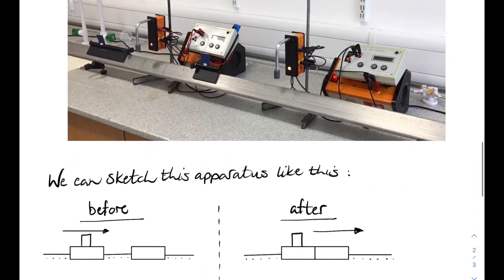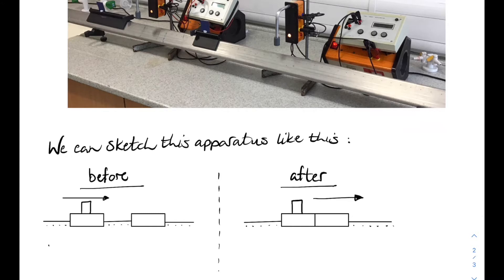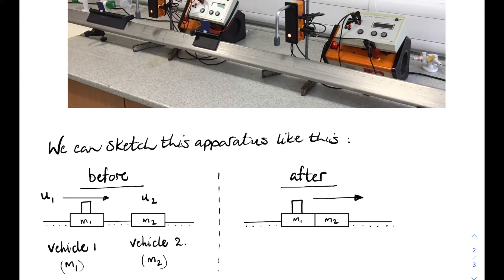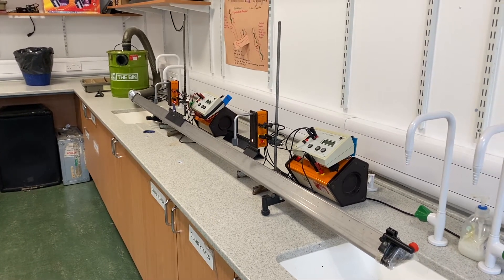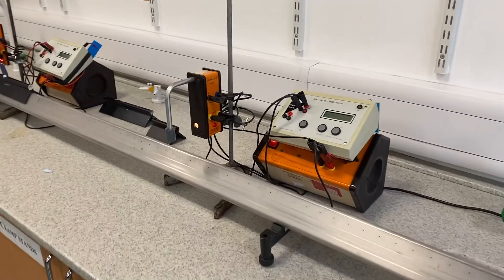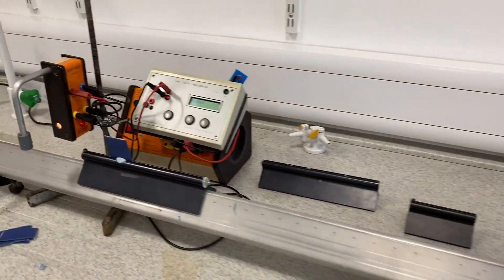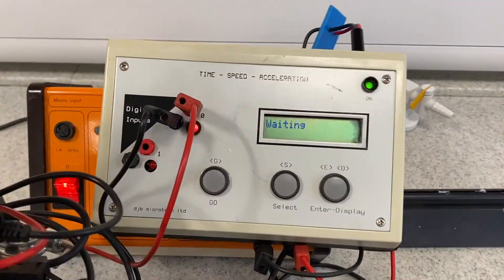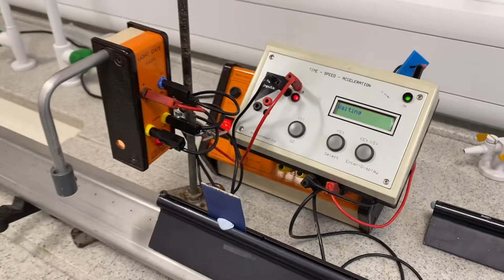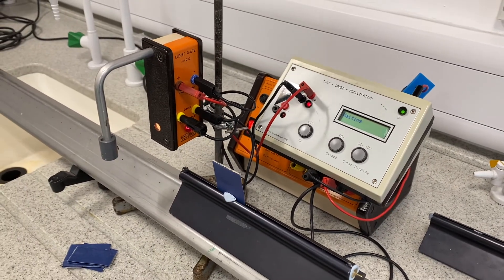We can sketch this apparatus like this. There are our two vehicles before — vehicle one, vehicle two — and if they stick together, there are our two vehicles after the collision. We have a linear air track with holes all the way along for air to blow through, two light gates each connected to a TSA computer set to measure speed.